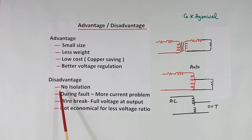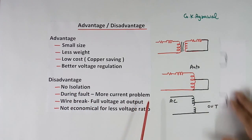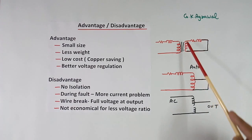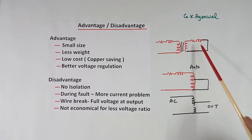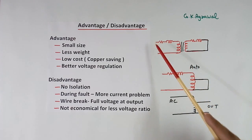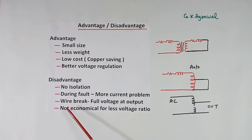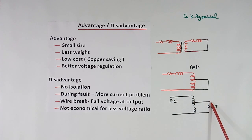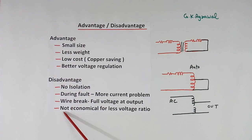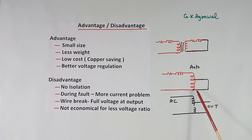Disadvantages: no isolation. During a fault, there is a more current problem. If the output gets short circuited, in a normal transformer the current is limited by both the primary and secondary impedances. In an auto transformer there is only 1 impedance to limit the current, so more current will flow. Also, if a wire break occurs, full voltage will appear at the output; if there is a capacitor, voltage will go up further. Additionally, it is not economical for a low voltage ratio at the secondary.